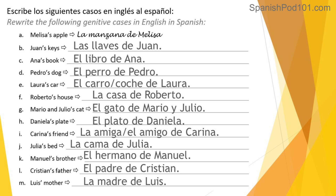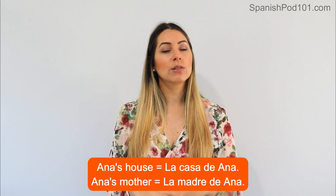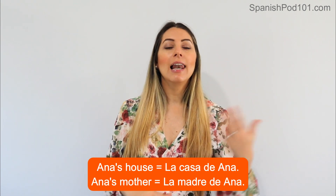Mario and Julio's cat — 'el gato de Mario y Julio.' Daniela's plate — 'el plato de Daniela.' Karina's friend — 'el amigo o la amiga de Karina.' Julia's bed — 'la cama de Julia.' Manuel's brother — 'el hermano de Manuel.' Christian's father — 'el padre de Cristián.' Luis's mother — 'la madre de Luis.' Remember, we don't have the genitive case in Spanish — we say the whole phrase using 'de.' Thank you so much for watching — nos vemos en la próxima clase, adiós!